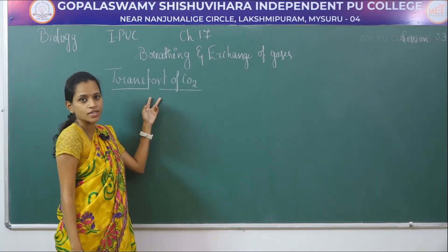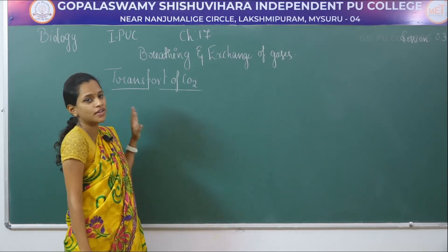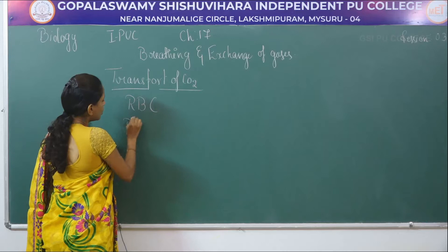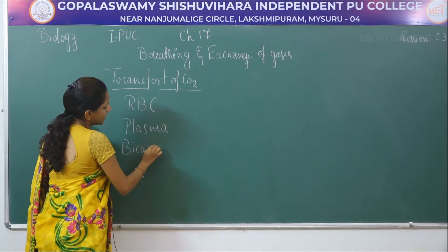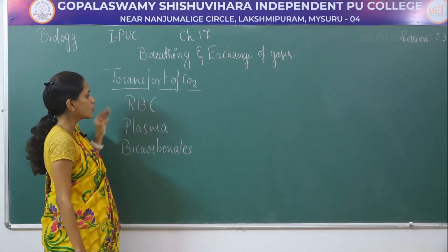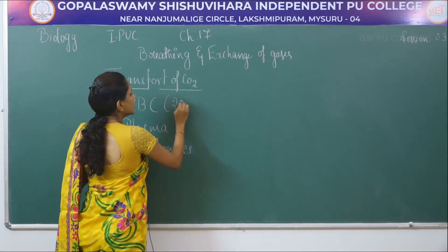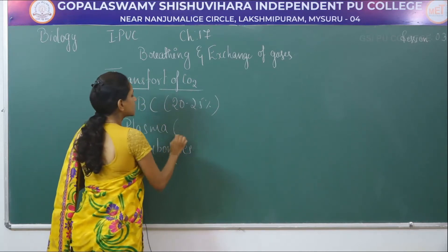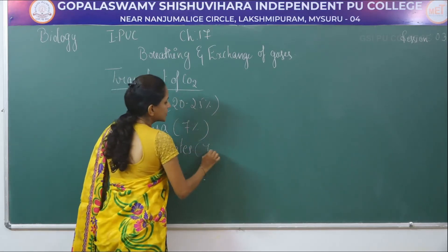Transport of carbon dioxide takes place based on three different components: in association with RBCs, in dissolved form in plasma, and in bicarbonate form. Transport in association with RBCs is around 20 to 27 percent, in plasma around 7 percent, and in bicarbonate form almost about 70 percent.